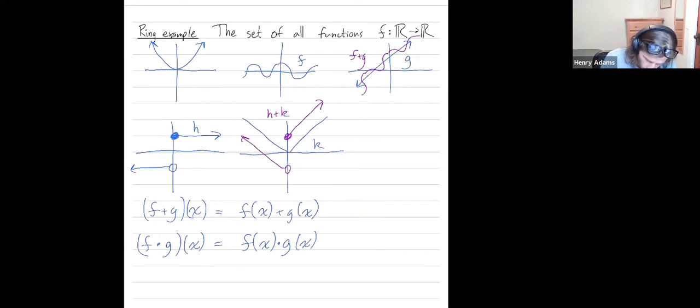Let me try multiplying h and k. So h times k. When I'm on the right half, I'm multiplying k by positive one, so it should stay the same.